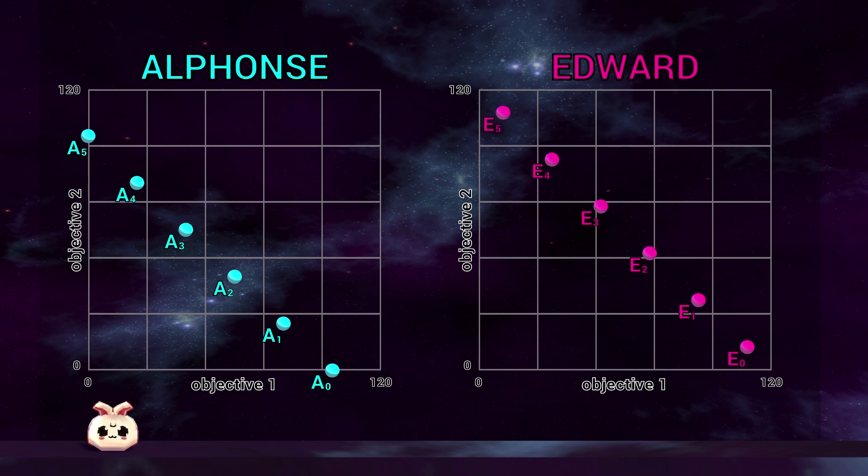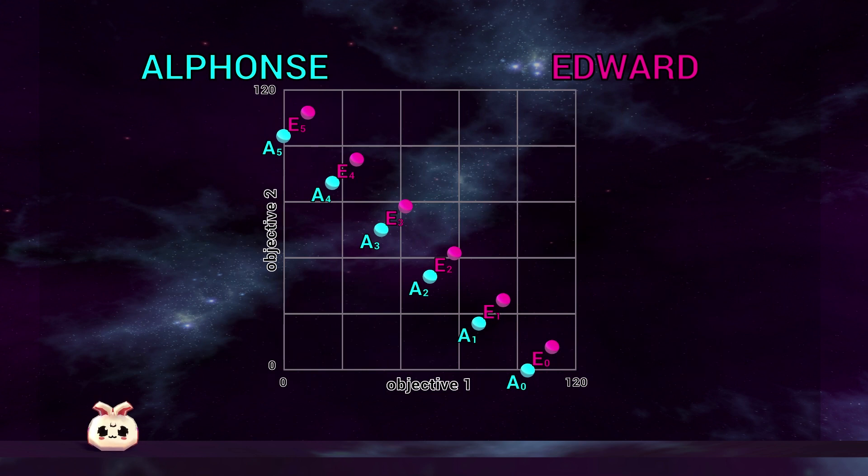In fact, if we lay the figures on top of each other, we can see that there are no card designs produced by algorithm Edward that perform better in speed or price, regardless of the trade-offs.